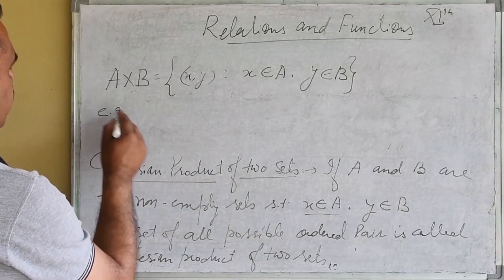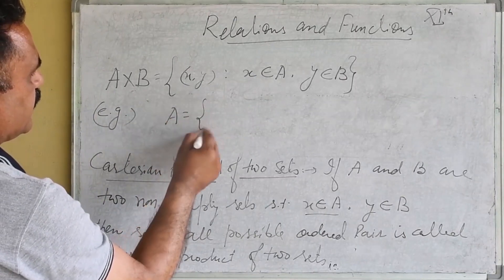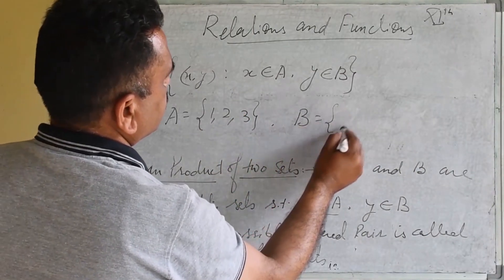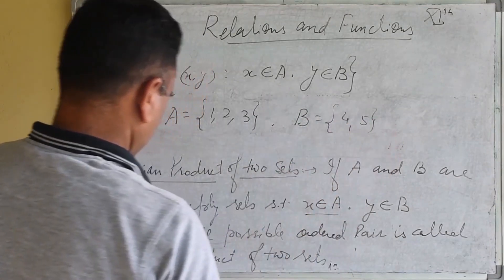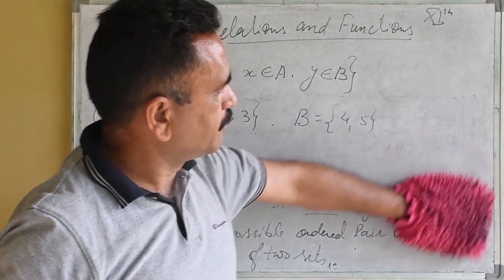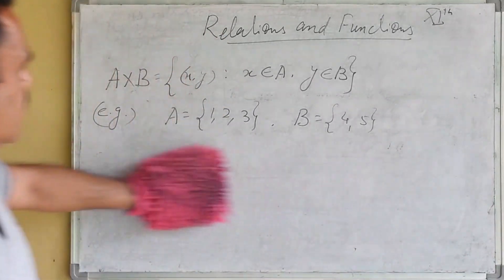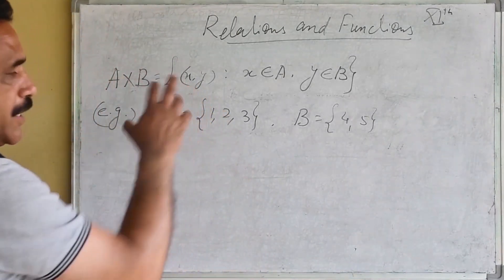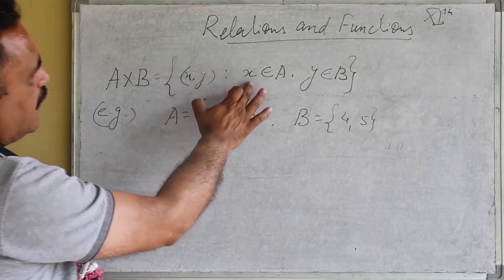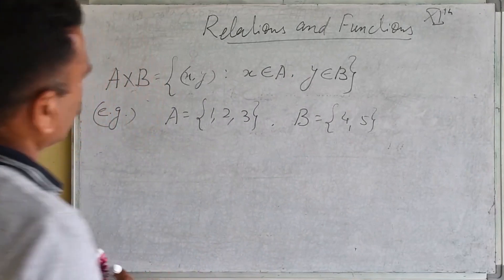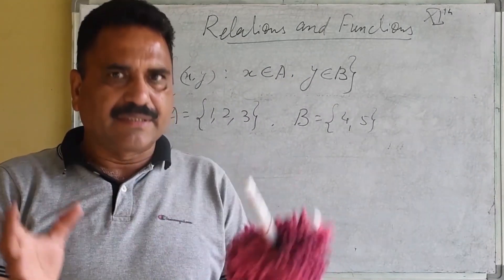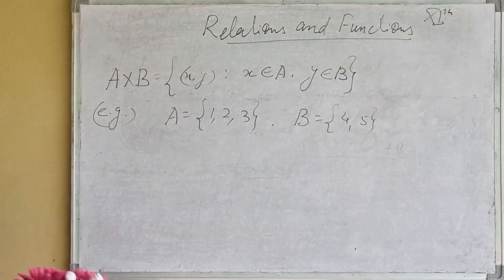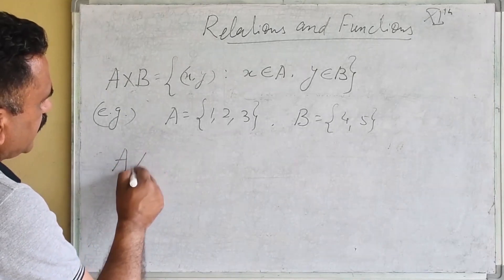We will take an example. Suppose we have two sets: set A = {1, 2, 3} and set B = {4, 5}. We want to calculate the Cartesian product of these two sets. The definition says it is the set of all possible ordered pairs (X, Y) where X belongs to A and Y belongs to B. So A cross B equals the set of all such (X, Y).